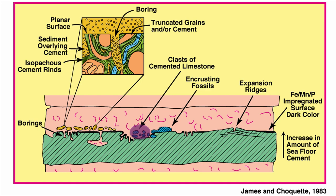You can have clasts of cemented limestone that were plucked from that surface. You can have evidence of encrustation of an organism that encrusted that surface, again because it's a hard surface. Or you can have expansion ridges which show that cement was growing at that location, forcing expansion of the sediment. Finally, iron, manganese, or phosphate impregnation of the surface gives it a dark color. This happens because there is not a lot of these species — iron, manganese, and phosphate — in seawater, but with a lot of time of exposure, you can form a crust of these minerals.